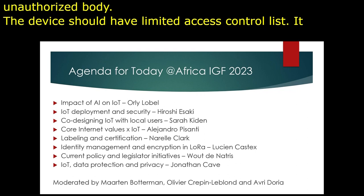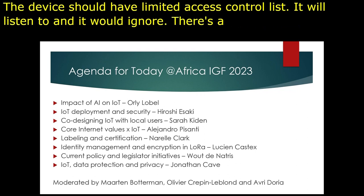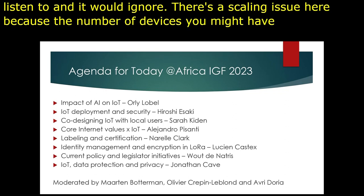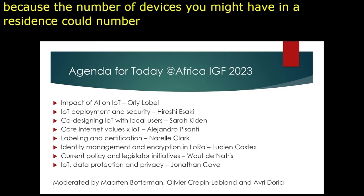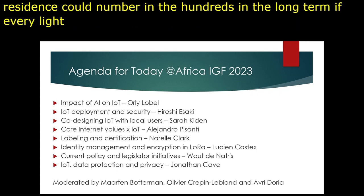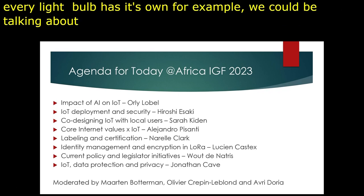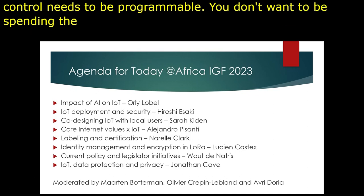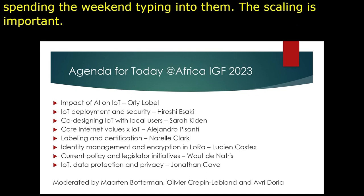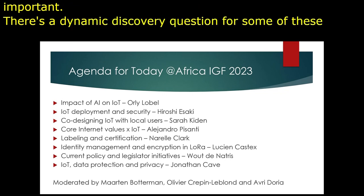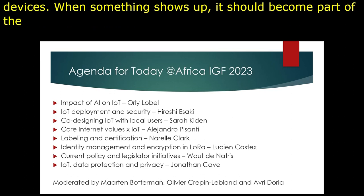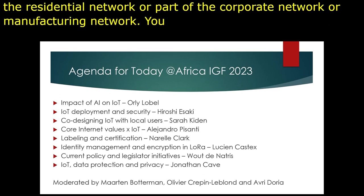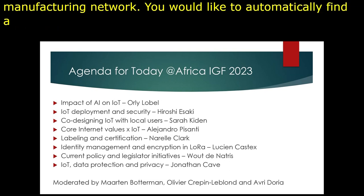The device also needs to know what other devices it's allowed to talk to. We should insist that the device be provisioned to know how to validate an incoming query or command from another device, so that it is not subject to takeover by an unauthorized party. Strong authentication and the use of cryptography and digital signatures will be our friend here. The device should have a limited access control list that it will listen to and all others it would ignore. There's a scaling issue here because the number of devices you might have in a residence could number in hundreds in the long term if every light bulb has its own control, and in an industrial setting we could be talking about thousands of devices. Configuration management and control needs to be scalable — you don't want to spend the entire week typing IPv6 addresses into these devices to configure them.